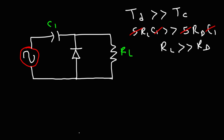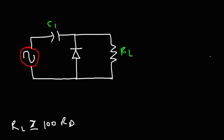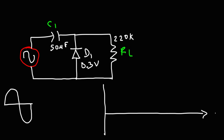If RL is 10 times the diode resistance that's acceptable, but to be safe, make RL more than 100 times the diode resistance. If you're unsure of the diode resistance, just make RL significantly large and the circuit will work. For example, use a 50 microfarad capacitor and a 220 kilohm load resistor. We'll call the diode D1 and use a germanium diode, which has a voltage drop of 0.3 volts.